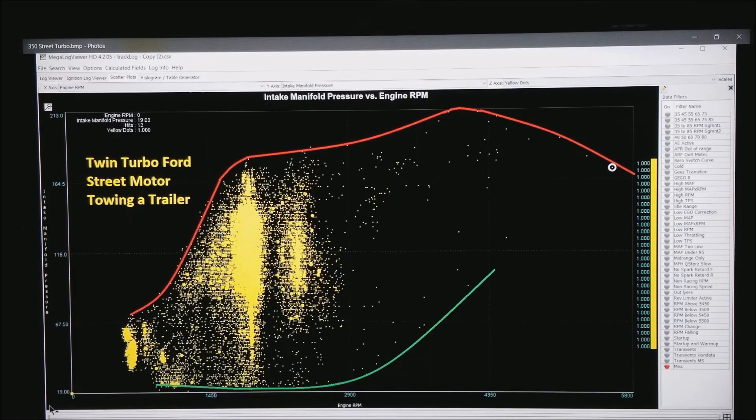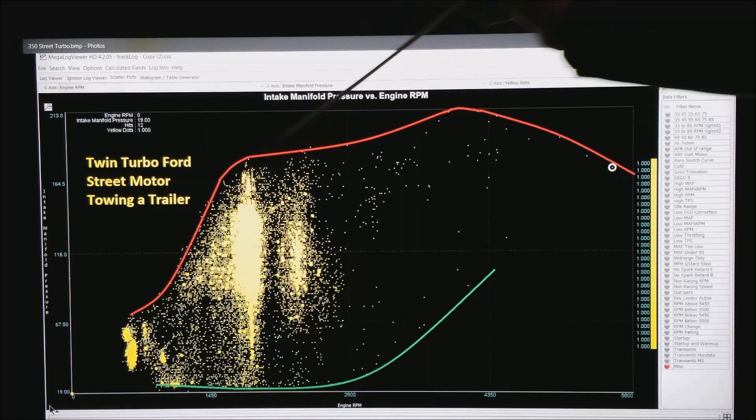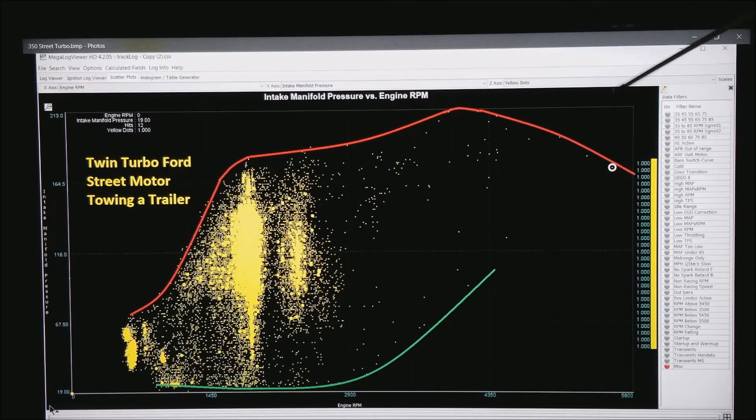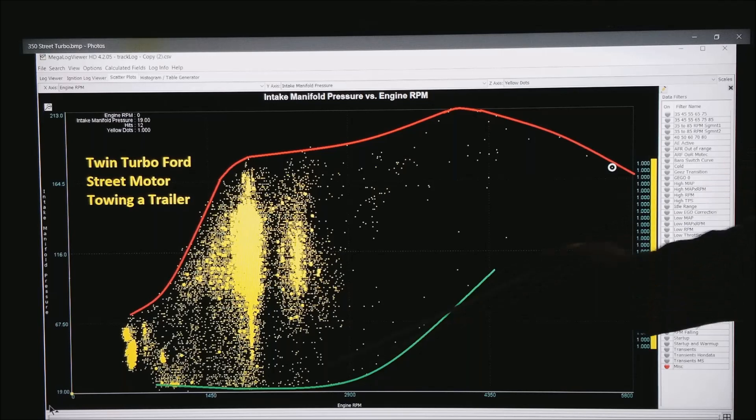This happens to be a plot of a twin turbo Ford street motor towing a trailer. This is a stock motor. You get the characteristic red line at full throttle, no dots are outside of that red line. Here is your downshift area.